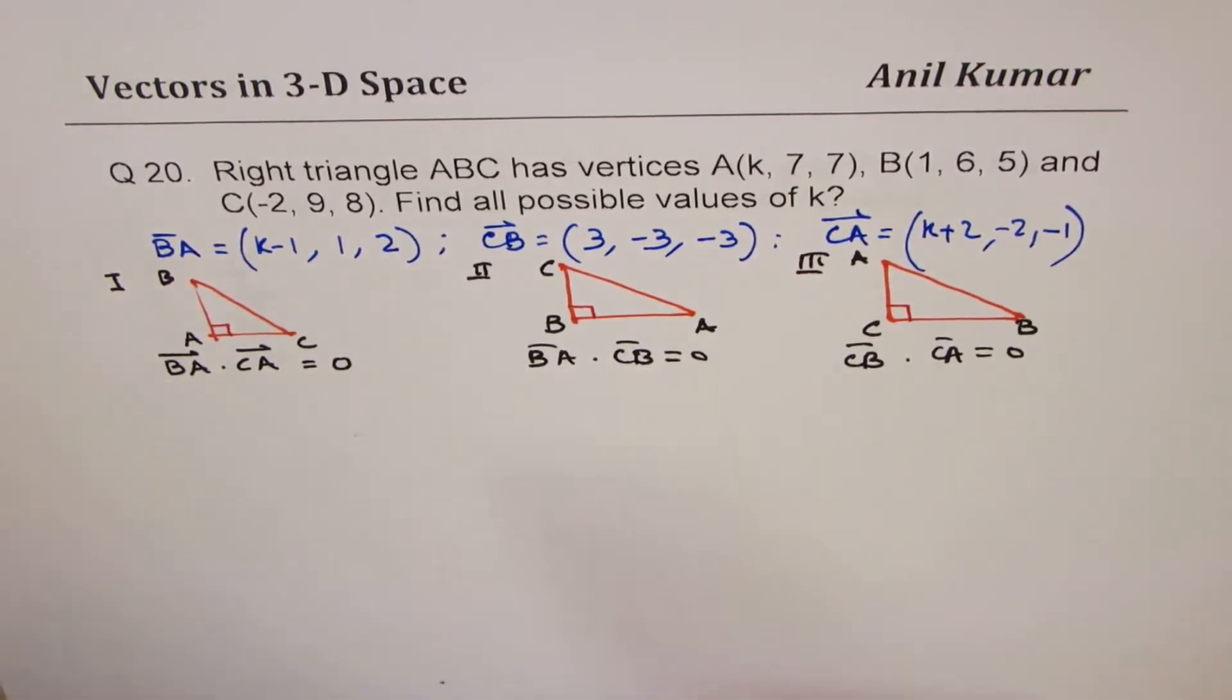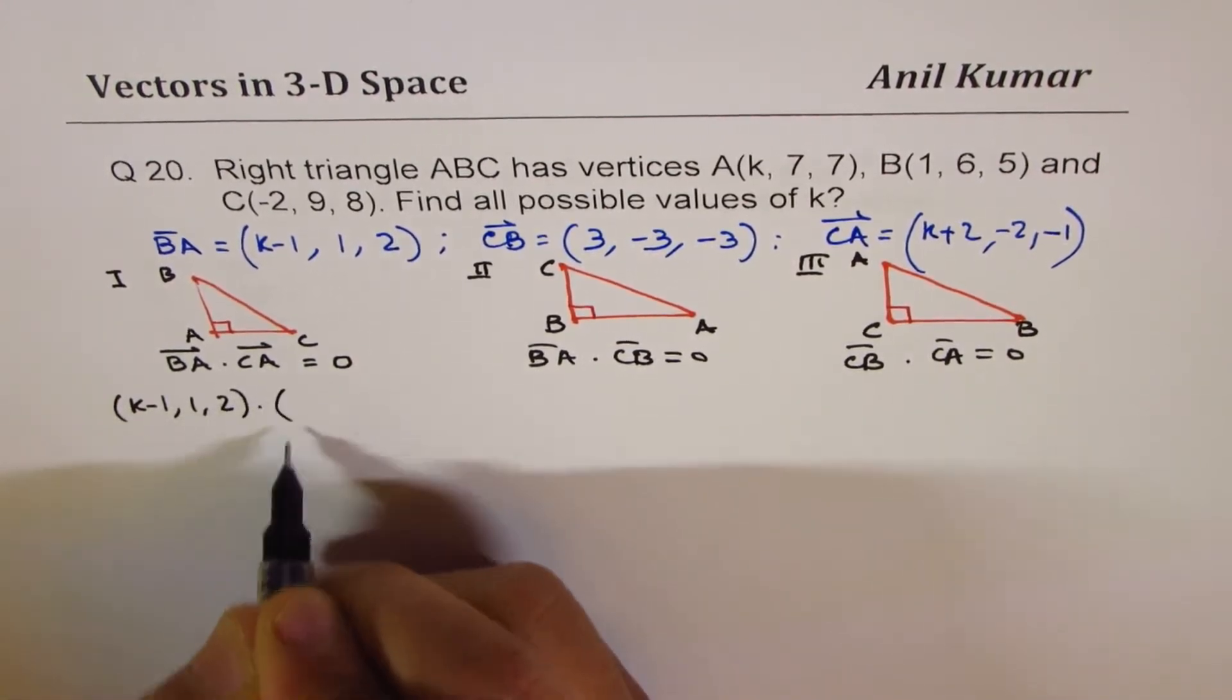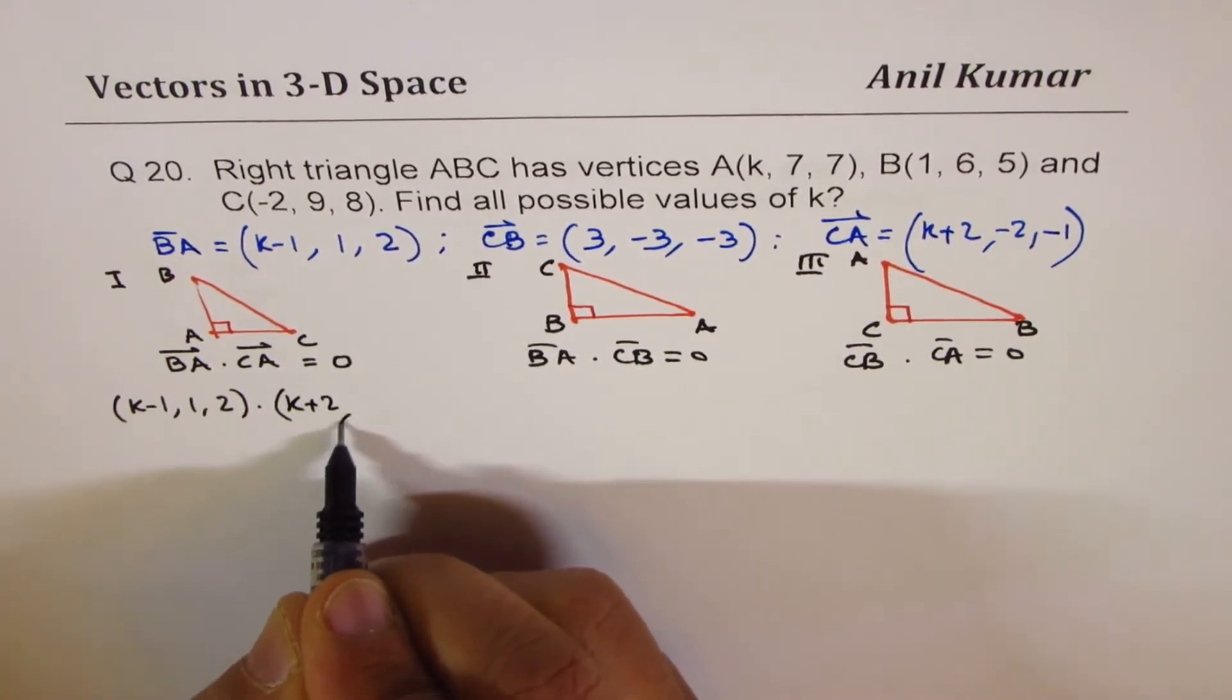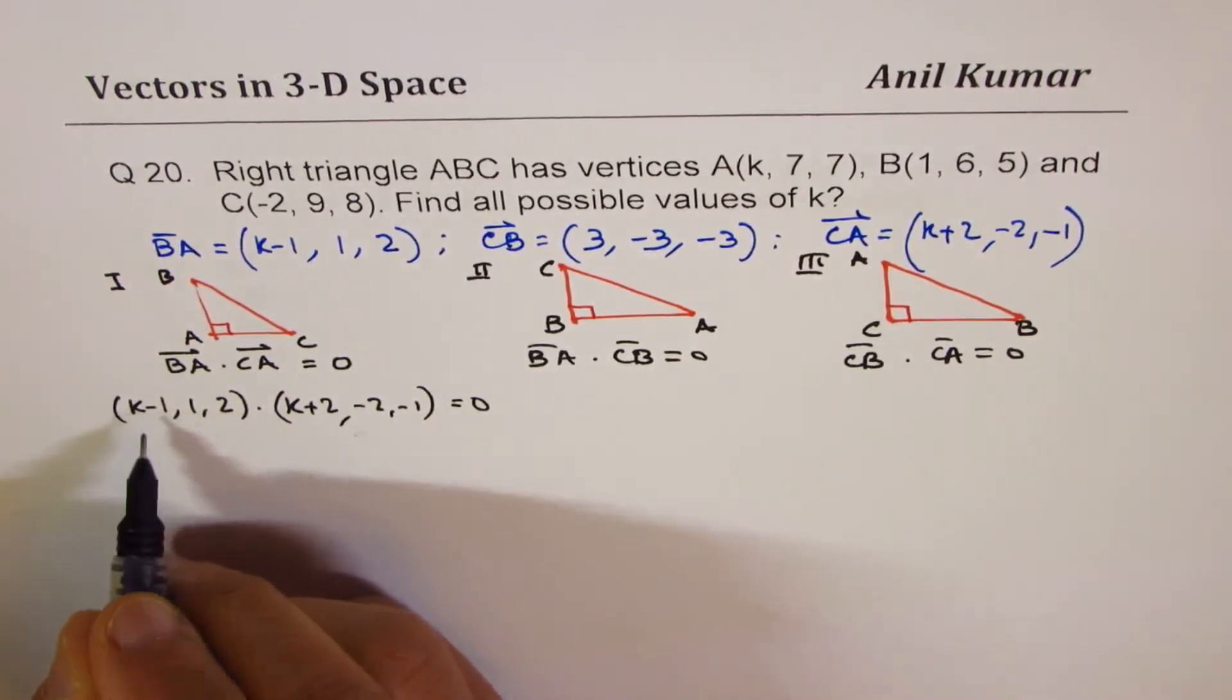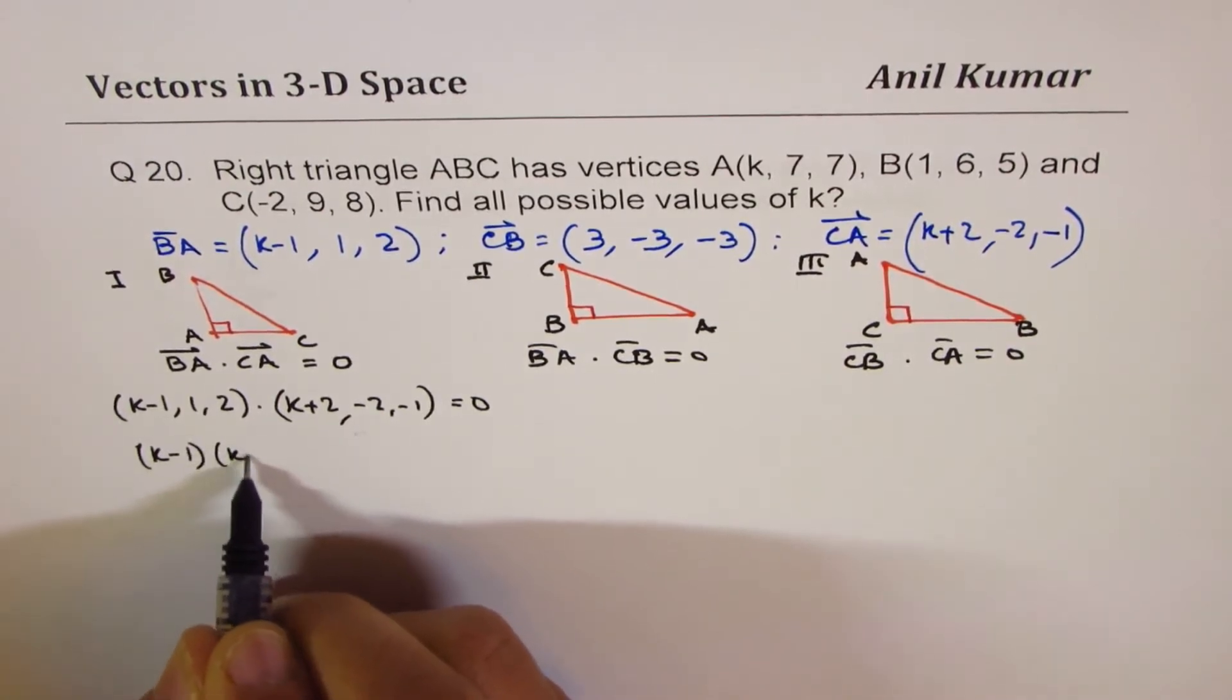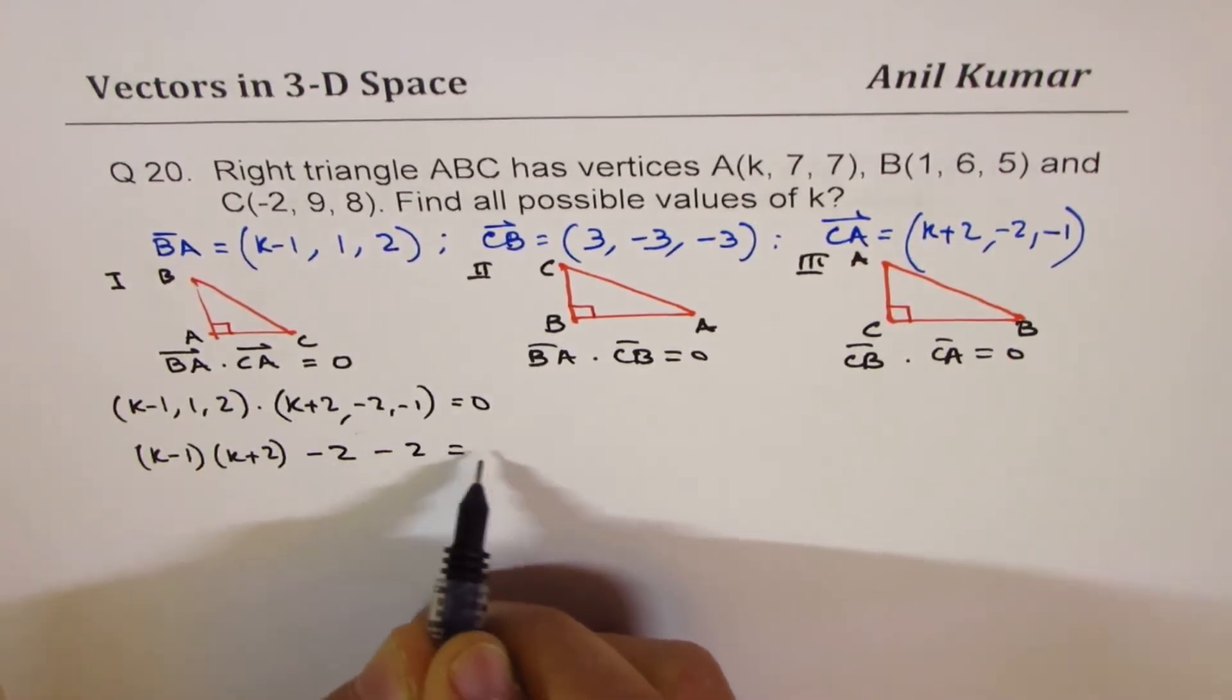Let's begin with BA dot CA first. BA is (K−1, 1, 2) dot CA is (K+2, −2, −1) equals to 0. So when you multiply you get, let me write, we'll do it in two steps. K times K+2, and then we have 1 times −2 as −2, and 2 times −1 equals to 0.